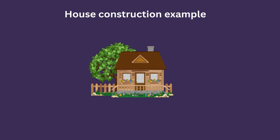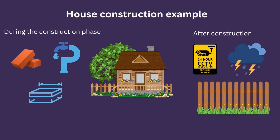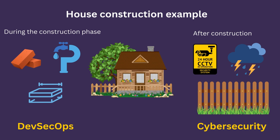Let us say we are building a house. There is the process of building the house, and then after the house is completed — two separate phases. During the construction phase, you make sure the foundation is neat, proper, and strong. You consider what kind of material you use to build the house. You handle the plumbing, making sure it is implemented properly so you don't have leaks in the future. Once the house is completely built, you focus on other security: installing CCTV cameras, external fences, rainwater harvesting, or external paint and glass that protects the house during heavy thunderstorms.